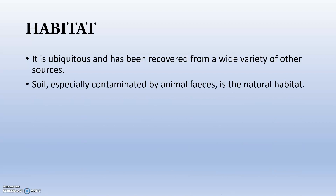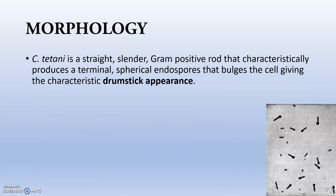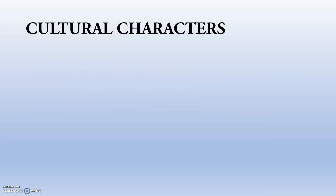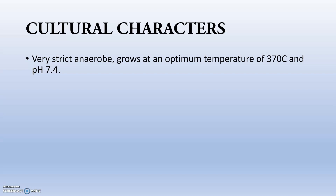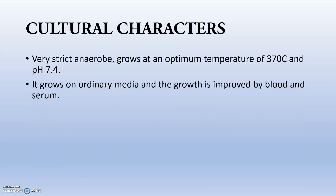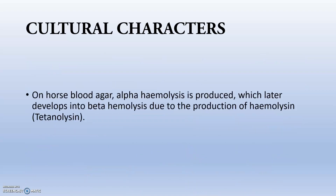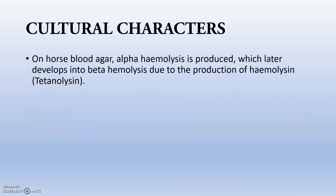The habitat of Clostridium tetani is ubiquitous, recovered from a wide variety of sources; soil and contaminated feces are the natural habitat. Morphologically, Clostridium tetani is a straight, slender, gram-positive rod that characteristically produces a terminal spherical endospore that bulges the cell, giving a drumstick appearance — a previous IZR exam question. It occurs singly or sometimes in chains, is non-capsulate, and motile by peritrichous flagella. It is a very strict anaerobe growing at optimum temperature of 37°C and pH 7.4, growing on ordinary media with growth improved by blood and serum. Surface colonies are difficult to obtain as the organism tends to swarm over the surface of agar, especially if the medium is moist.